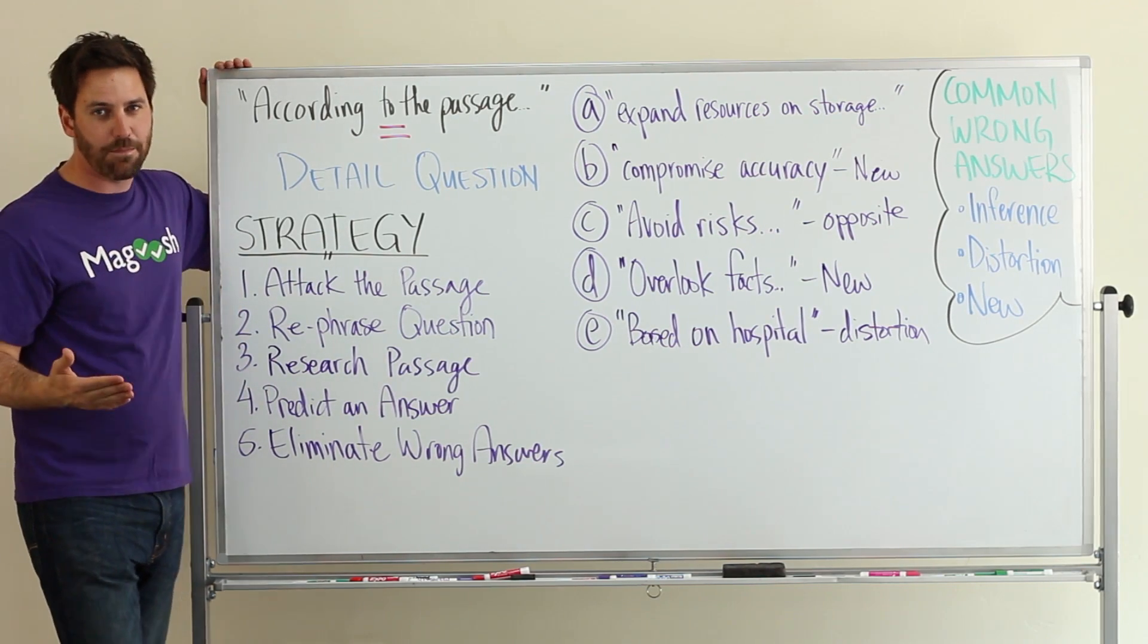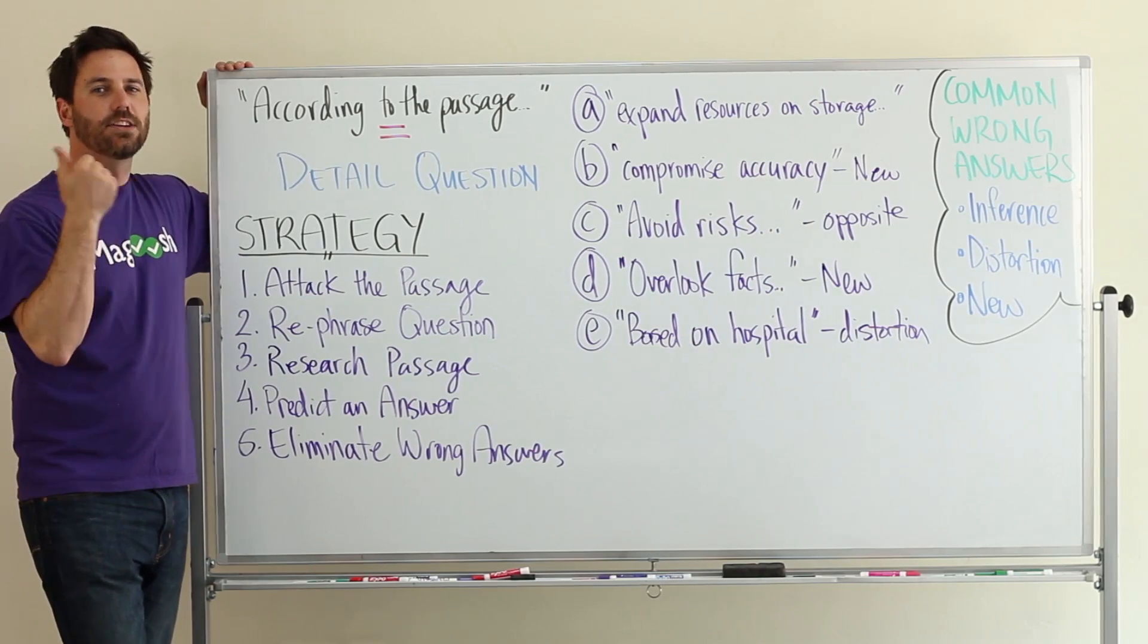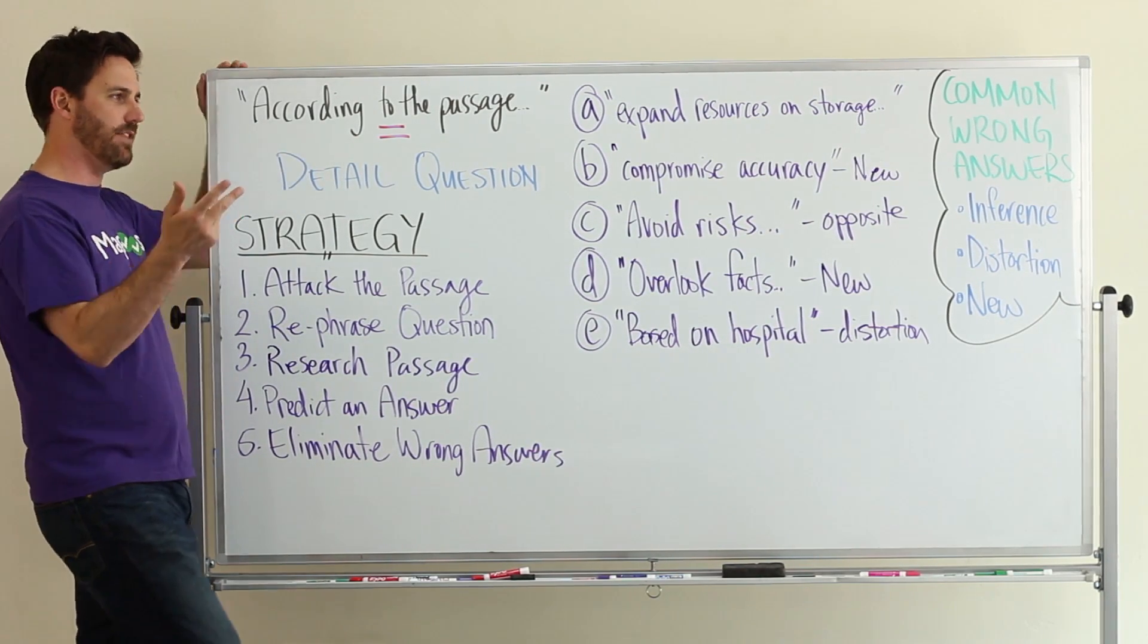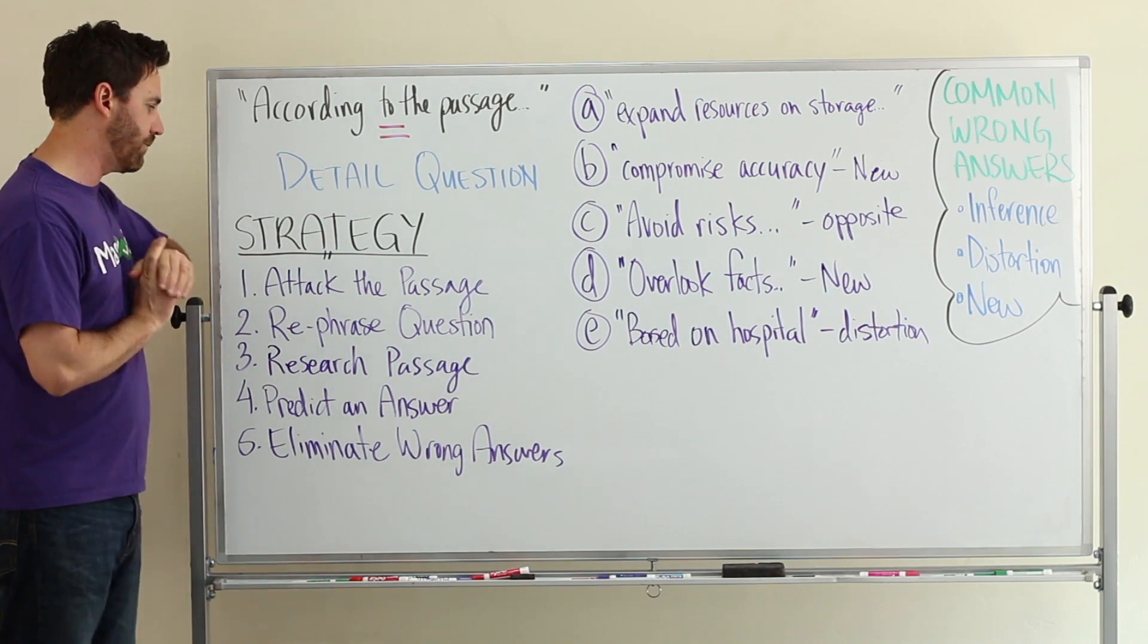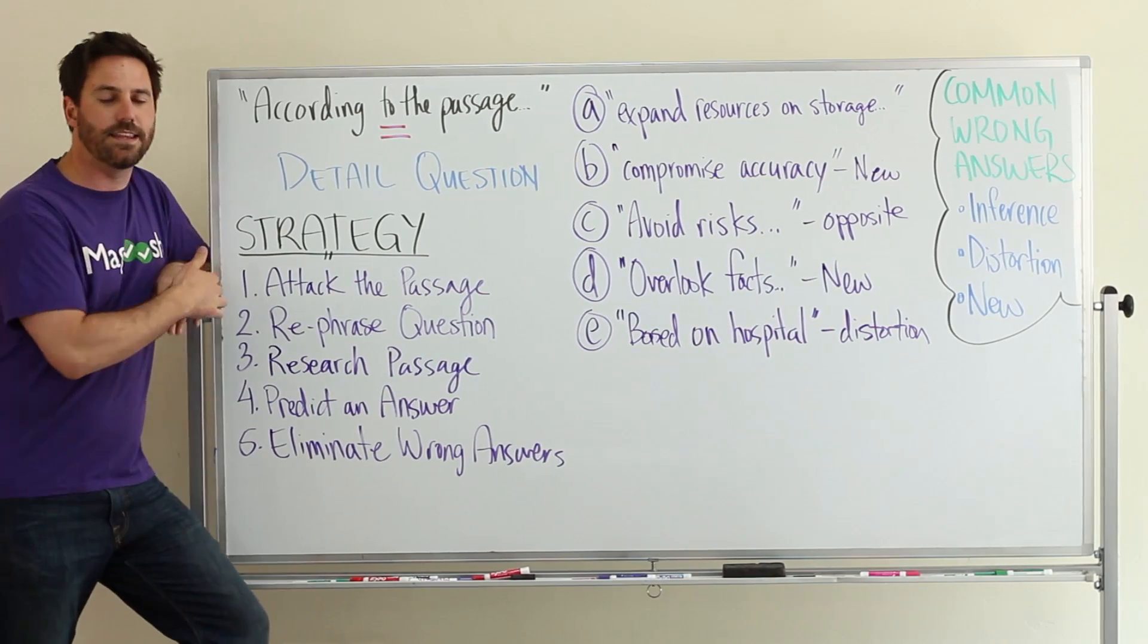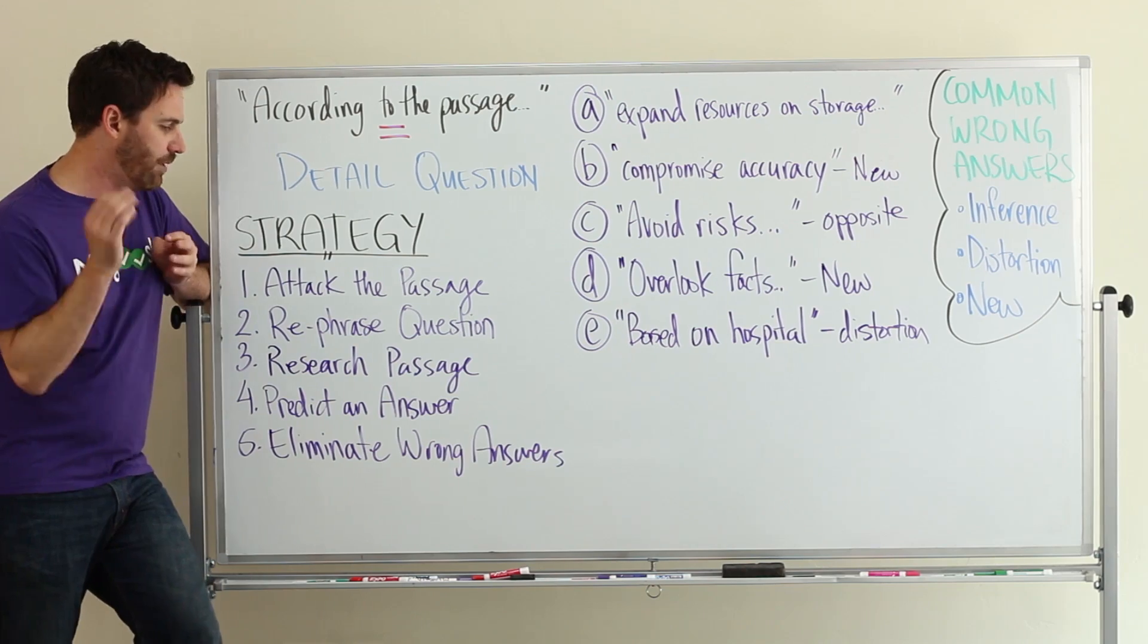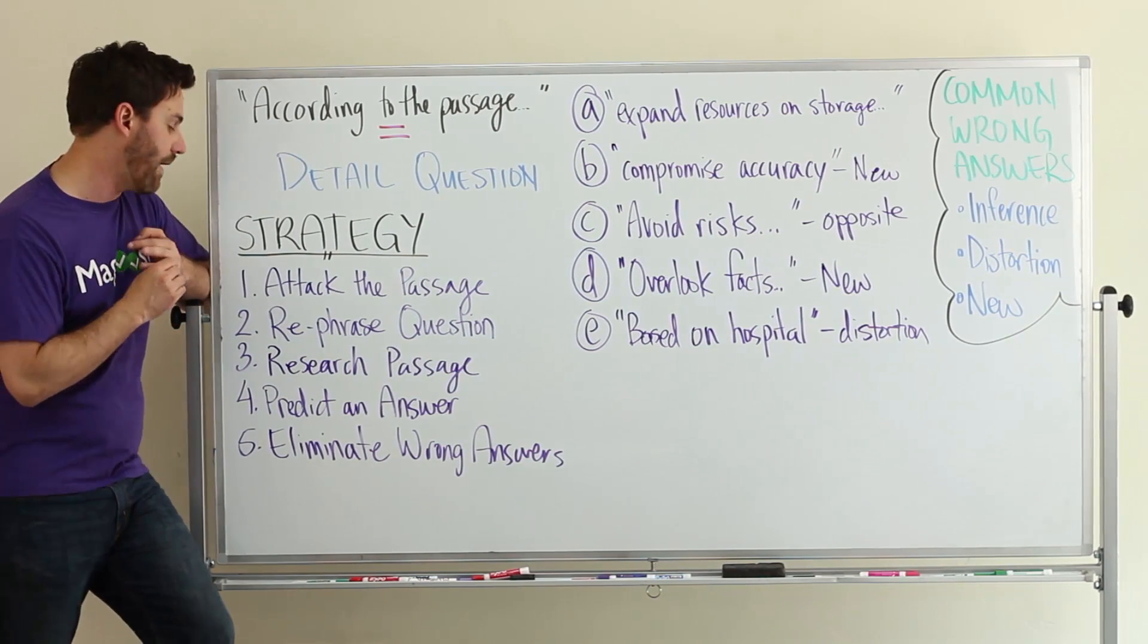Step one: attack the passage. So dive into the passage, figure out what the main idea is, outline or understand the structure and flow of the passage, and then get a sense for the author's tone and the author's purpose for writing. We did this in question 99 for this passage, so I'll put a link down below so you can go to that video if you want to dive deeper into the passage.